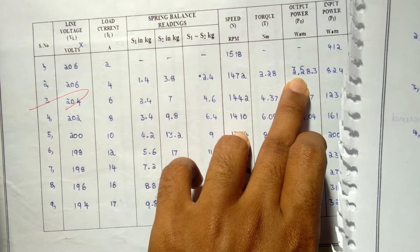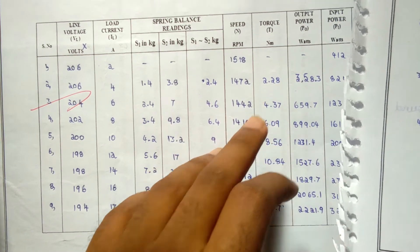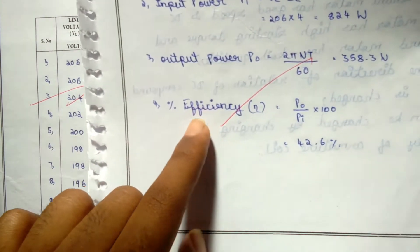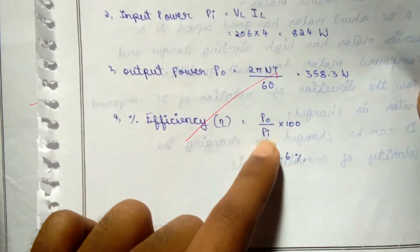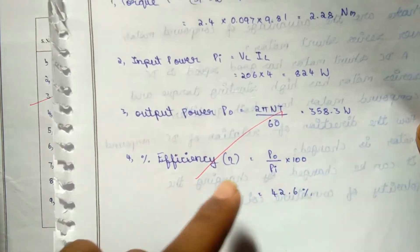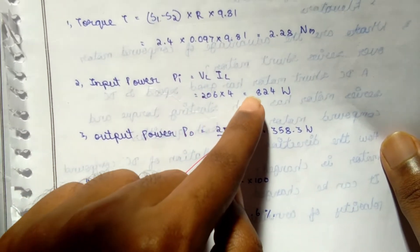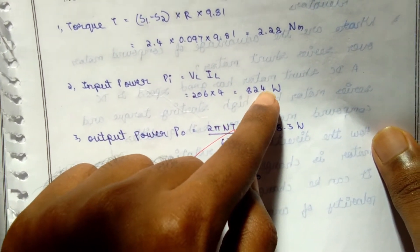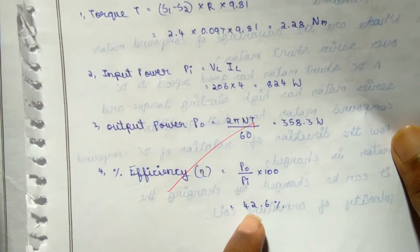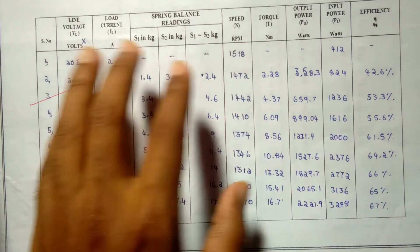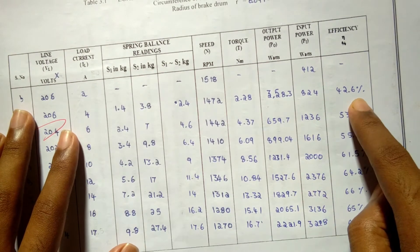And so finally efficiency will be output power by input power × 100. Output power is 358.3 and input power is 824 × 100, so the value will be 42.6. We get the efficiency is 42.6% here.